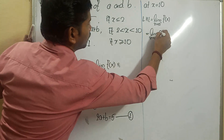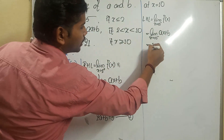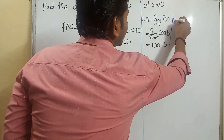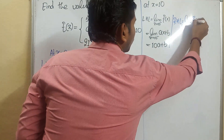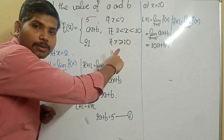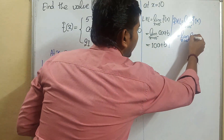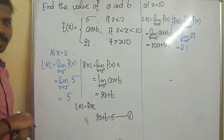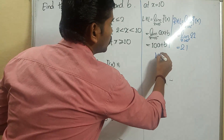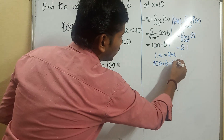Substituting x = 10 gives 10a + b. For RHL: limit as x tends to 10 plus — greater than 10 gives the constant 21. Limit applied to a constant gives 21. Since the function is continuous, LHL must equal RHL: 10a + b = 21. Call this equation number 2.